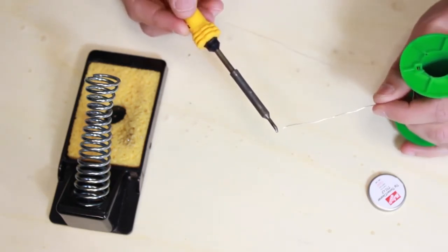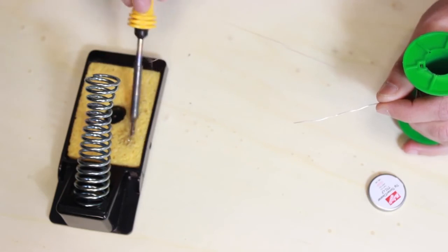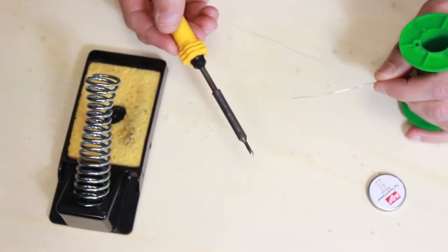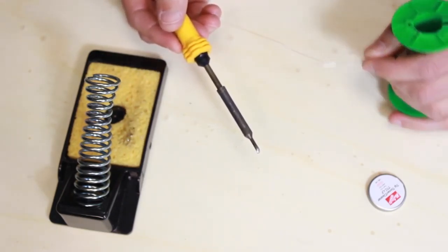Again, we can run a bit more solder on, wipe away the excess, and we have a nice, clean tinned soldering iron ready for our soldering job.